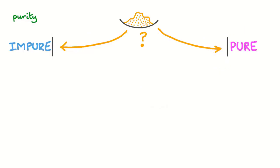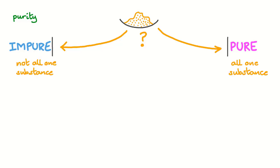To a chemist, a sample is either perfectly pure or not. If a sample is not pure, we say that it is impure. But that's very black and white. The slightest impurity will make a sample impure, so we can talk in more detail.